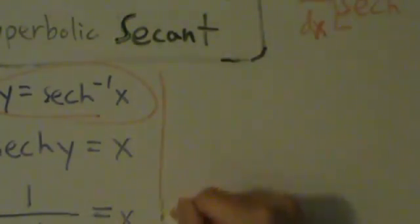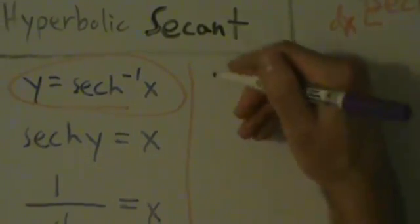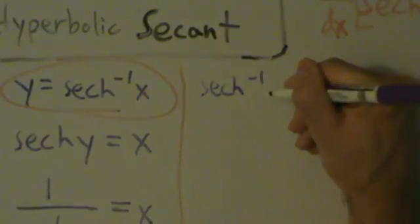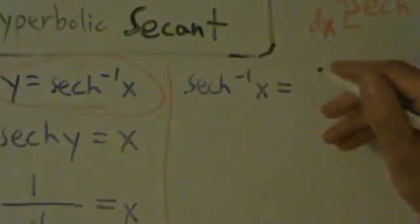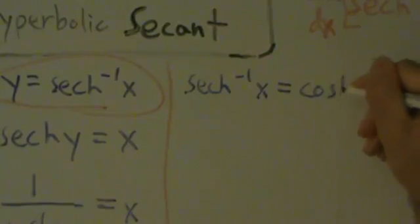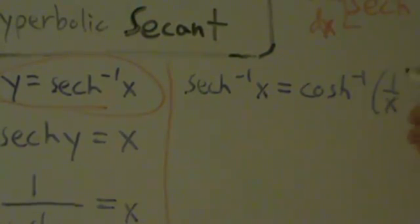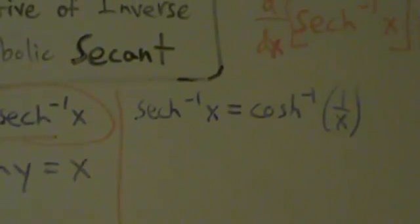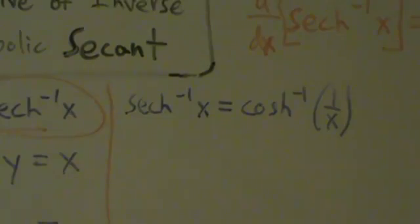So let's go ahead and write that down. Inverse hyperbolic secant of x equals inverse hyperbolic cosine of 1 over x. These are equal to each other because they're both equal to y, so the transitive property says they have to be equal. So if we want the derivative of inverse hyperbolic secant of x, we'll just take the derivative of inverse hyperbolic cosine of 1 over x. Just like in the last video, we're going to have to use the chain rule.